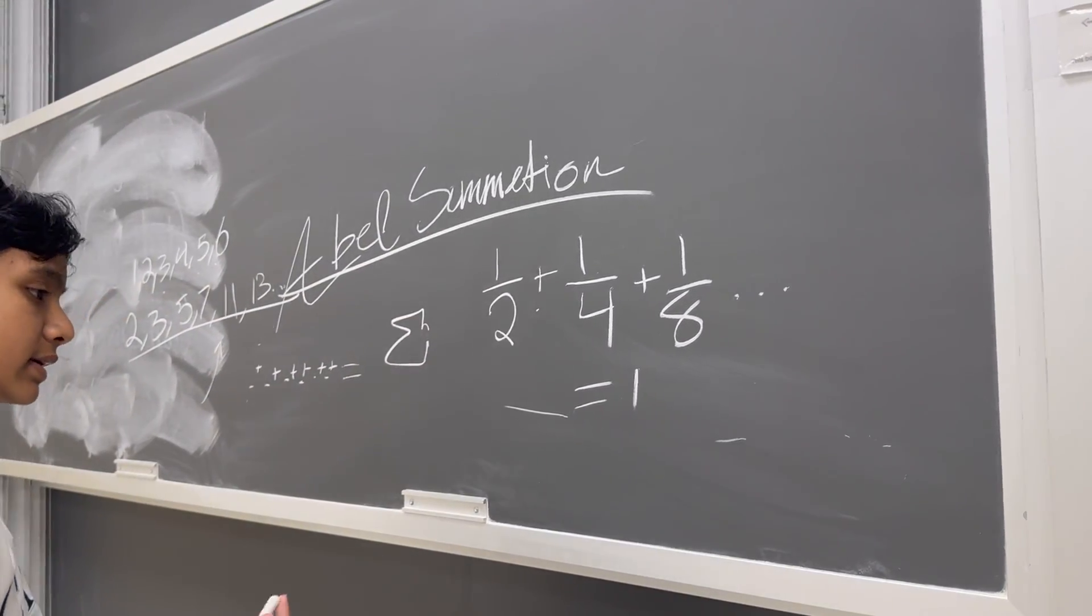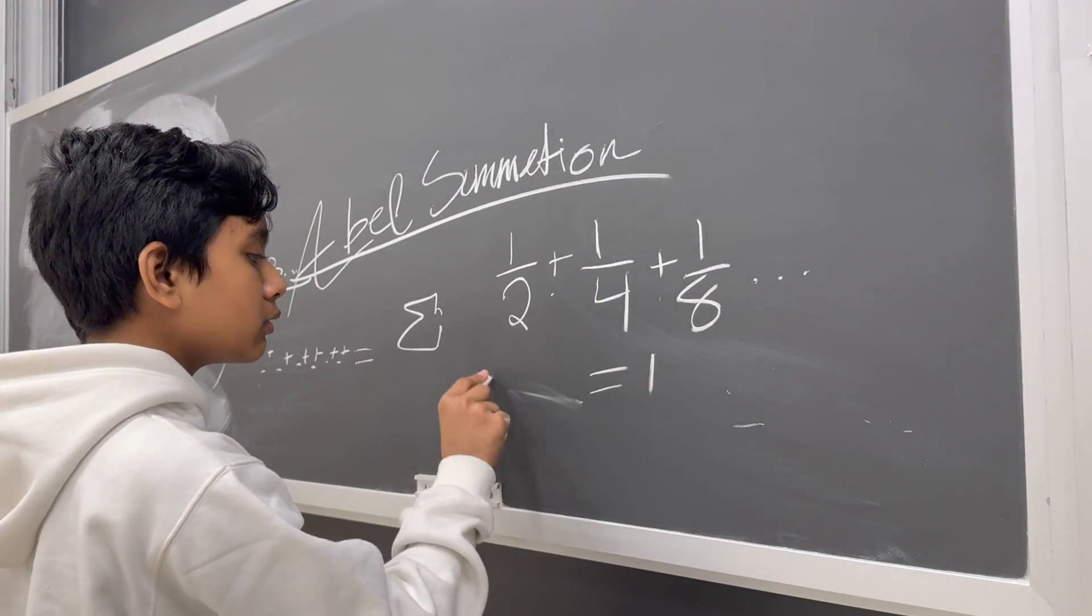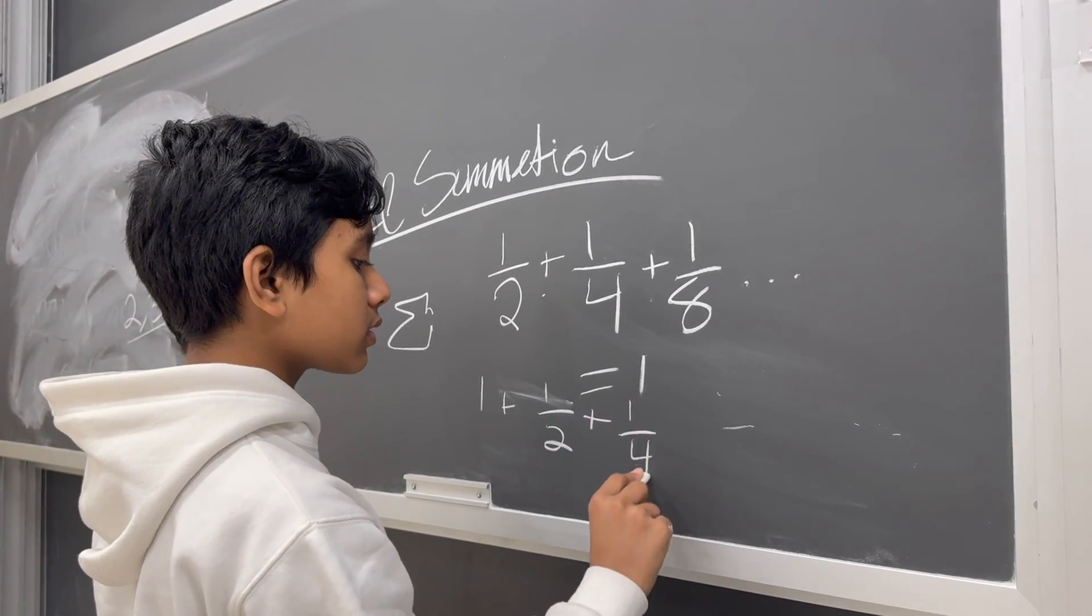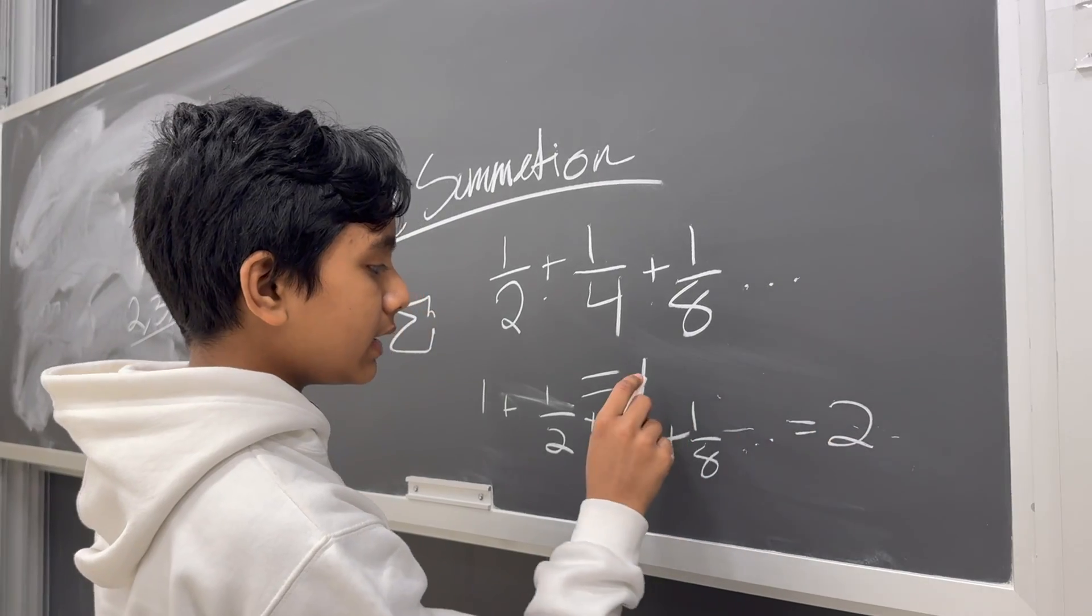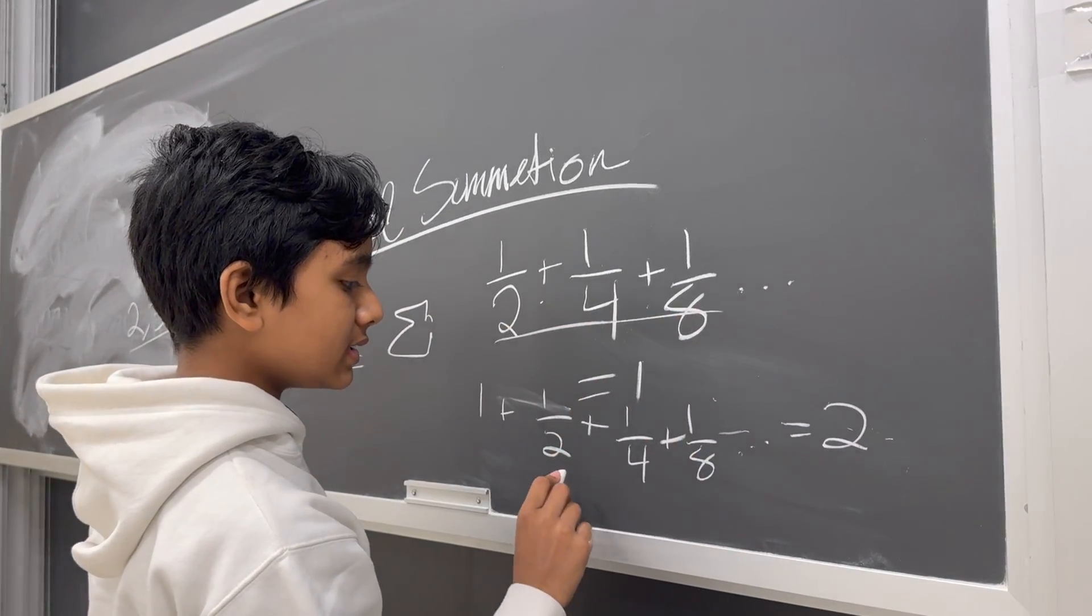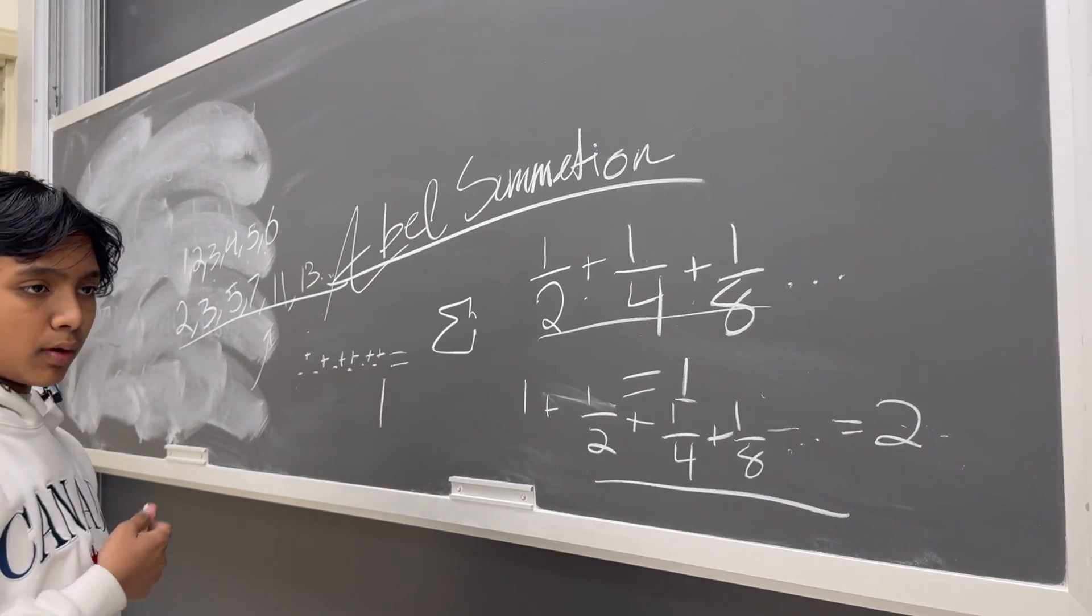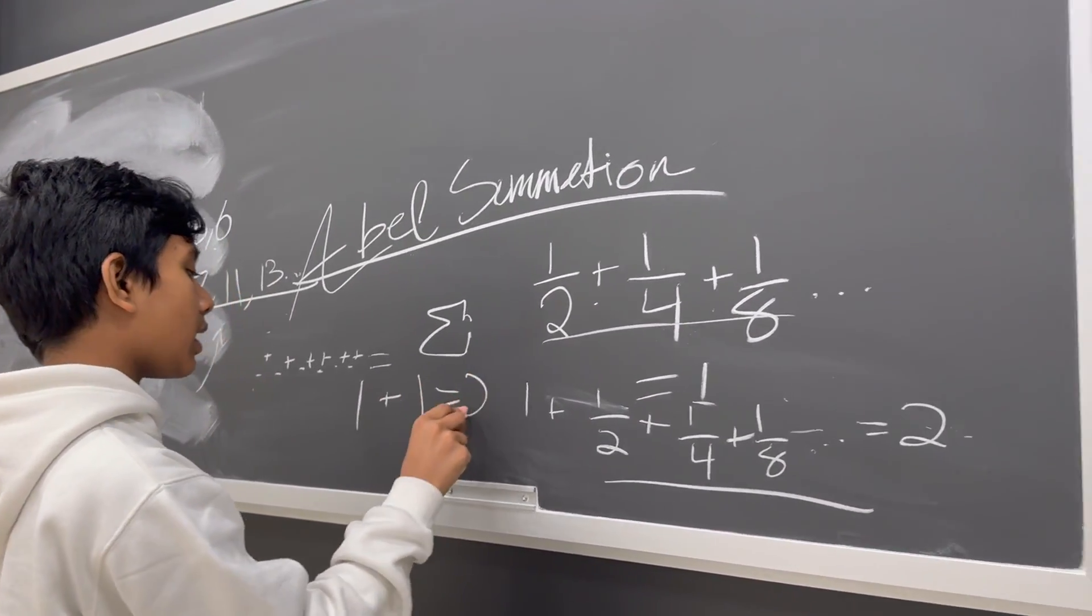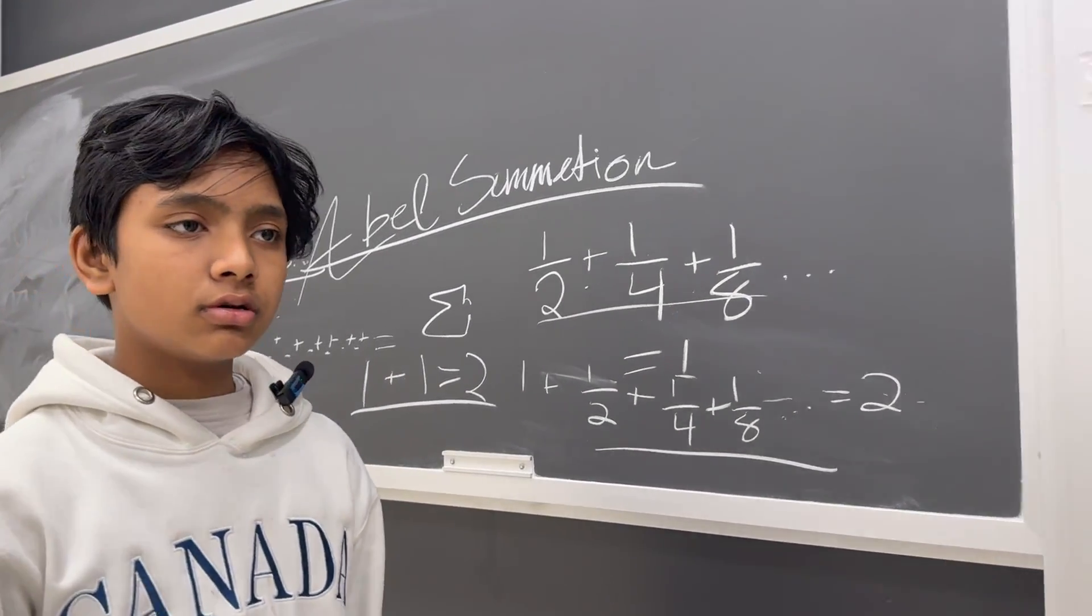This can be proved in a multitude of ways. The most easy one is just multiplying both sides by 2 to give 1 plus 1/2 plus 1/4 plus 1/8 equals 2. Then, you'll realize that this is the same as that, so this is just equal to 1. It's not like we removed the term because it can't subtract from infinity. So then we get 1 plus 1 is 2, a statement that we innately know to be true.